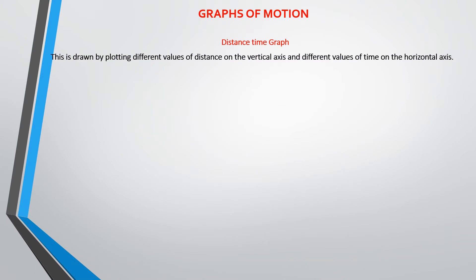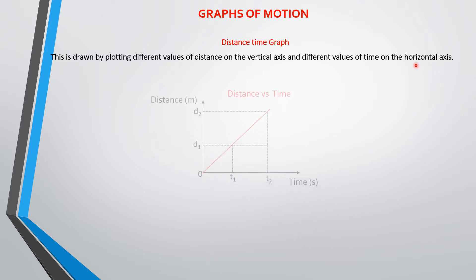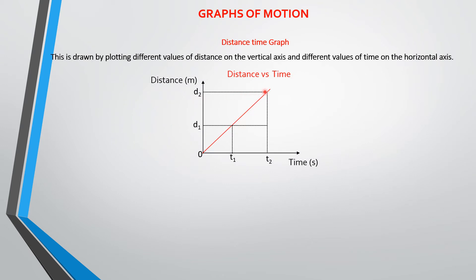Our first graph is the distance-time graph. To draw a distance-time graph, you plot values of distance on the vertical axis and values of time on the horizontal axis. This is an example of a distance-time graph showing increasing distance with increasing time. This is distance one and this is distance two.